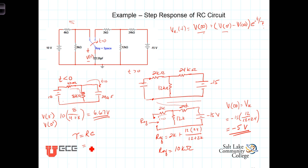tau is equal to then 10 times 10 to the 3rd times C which is 20 microfarads or 20 times 10 to the minus 6th and that product then is equal to 0.2. So, we've got the initial voltage, we have the final voltage and we have tau,